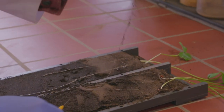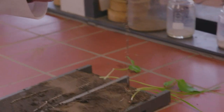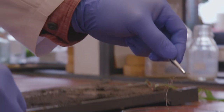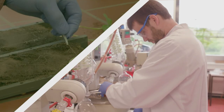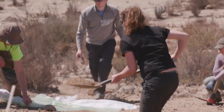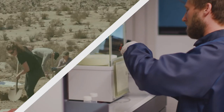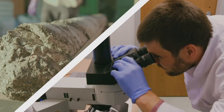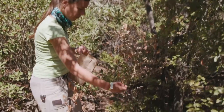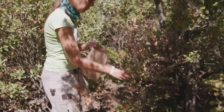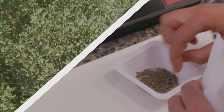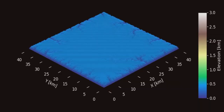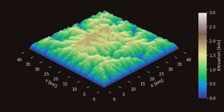Ya sabemos mucho sobre los procesos que actúan en la superficie de la Tierra. Pero la mayoría de los estudios quedan dentro de los límites tradicionales de las disciplinas científicas individuales. La ciencia del suelo se ocupa de la formación del suelo y de las raíces de las plantas. La geoquímica se ocupa de las conversiones químicas en la superficie de la Tierra. La microbiología investiga las comunidades microbianas. La ecología vegetal investiga las relaciones entre el clima y la diversidad vegetal. La geomorfología investiga cómo se forman y erosionan los paisajes.